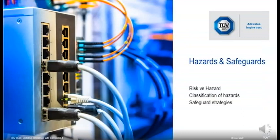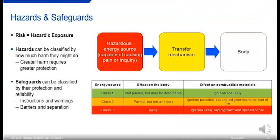We're going to look now at hazards and safeguards, which is an essential part of 62368. We'll talk about risk versus hazard, the classification of hazards, and some safeguard strategies. Risk is hazard multiplied by exposure — if the hazard is high, the risk is low if there's very little chance of exposure. This is where safeguards come in. 62368 classifies hazards and safeguards systematically. Hazards are classified as class one, two, or three according to their severity.